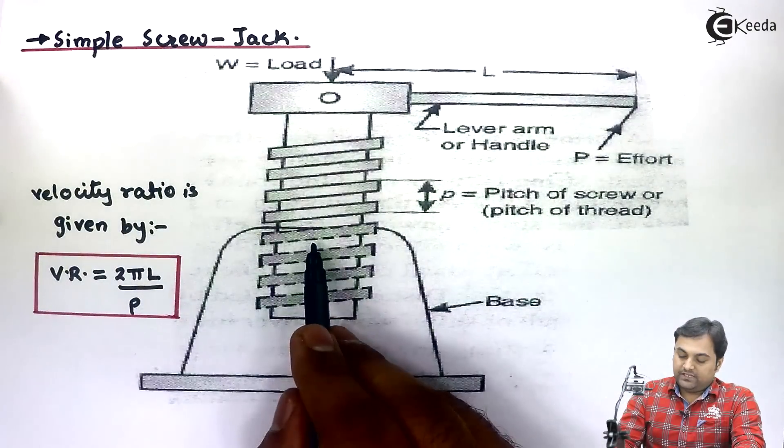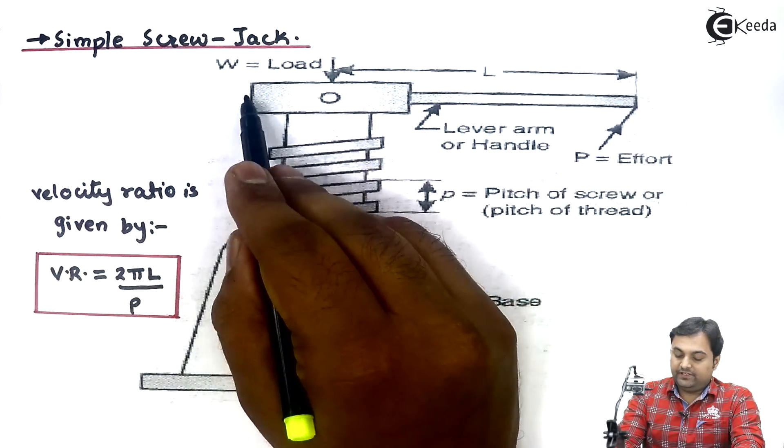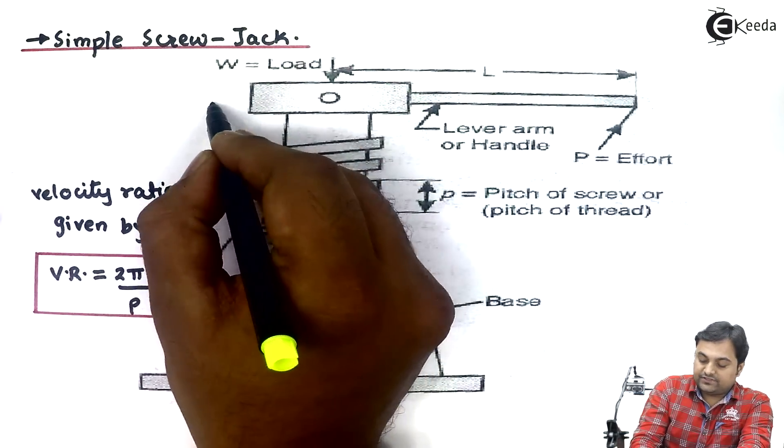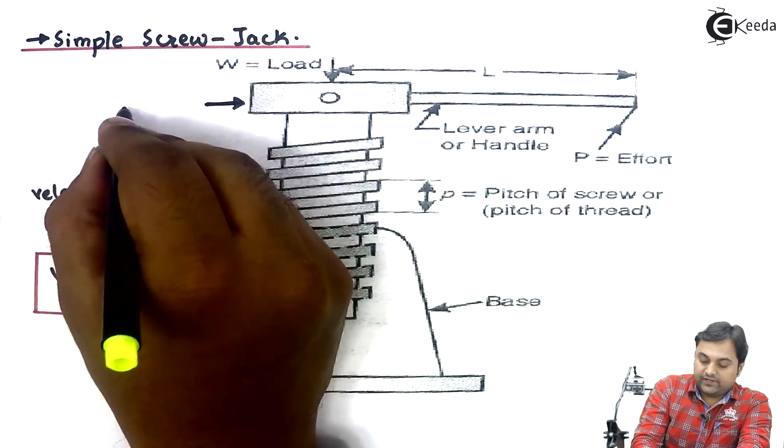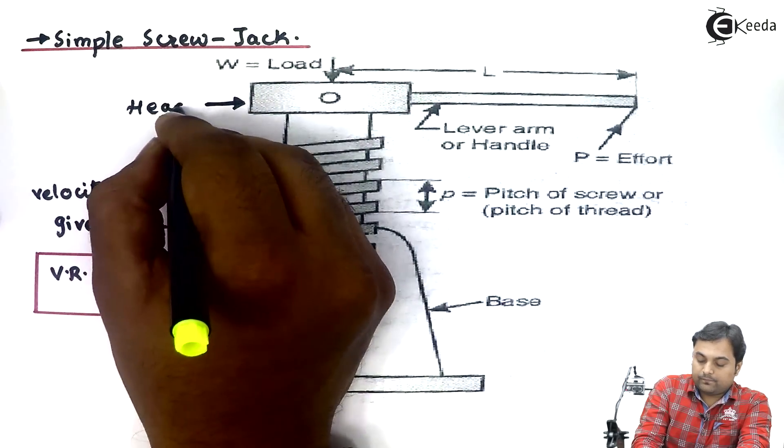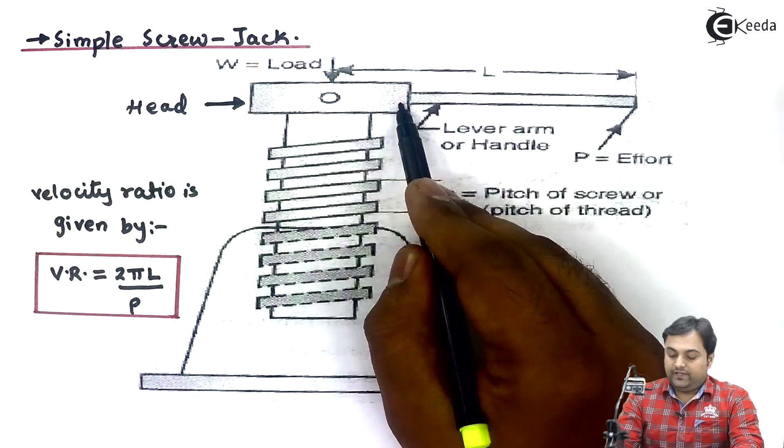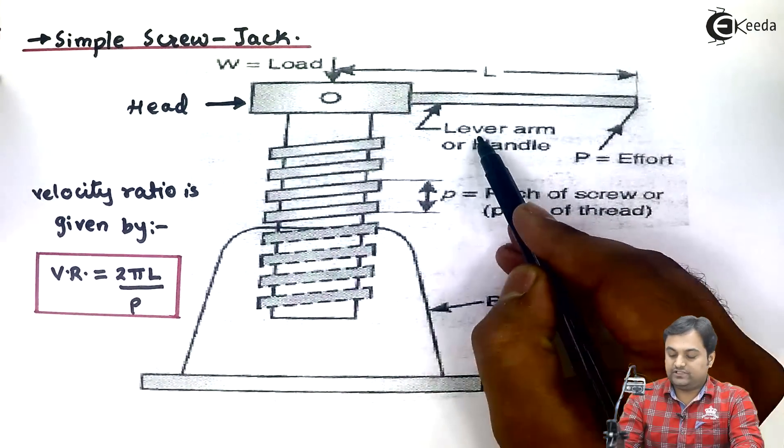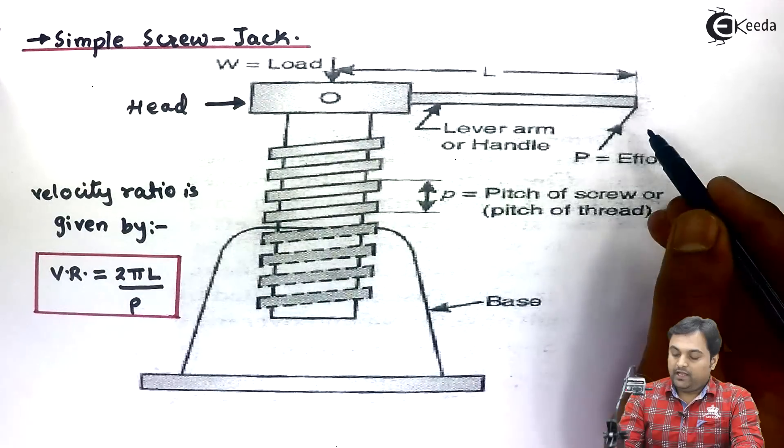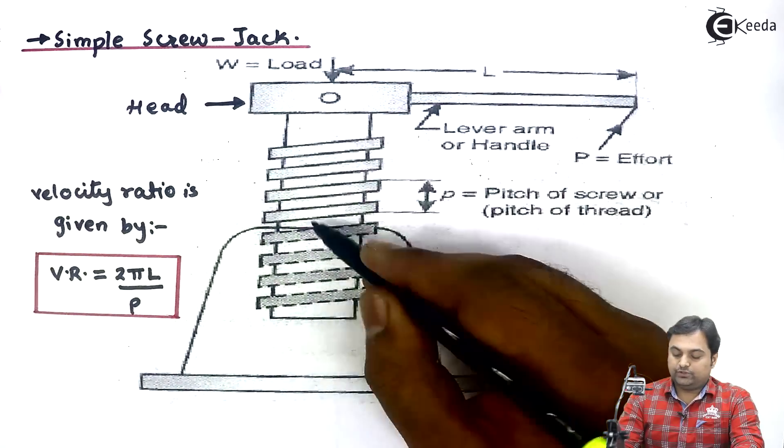At the other end of the screw we have this top portion, which is called the head. Then we have this handle of the screw jack, which is called lever arm or handle.